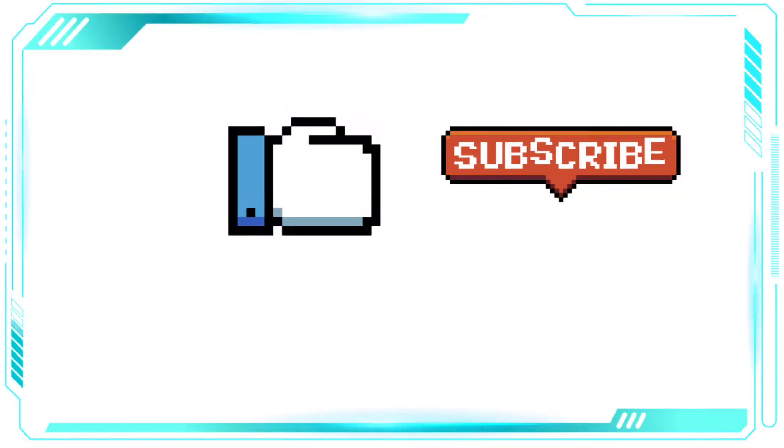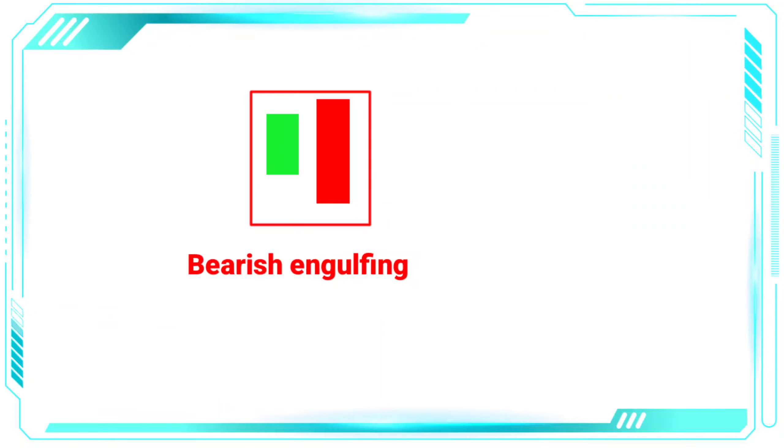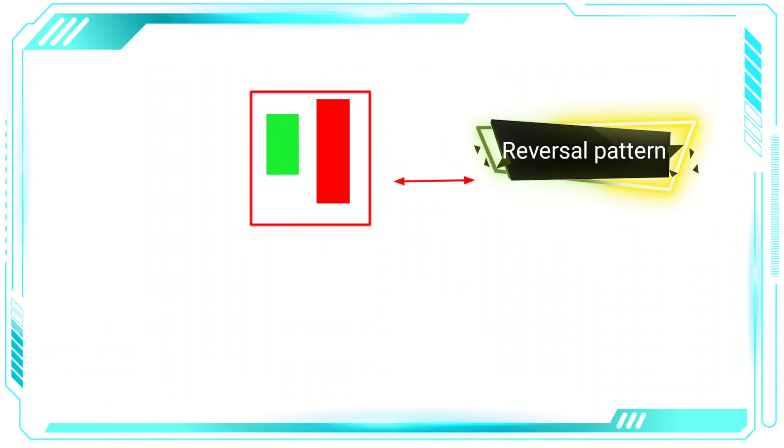Let's start discussing the bearish engulfing pattern. The bearish engulfing pattern is a popular candlestick pattern used in forex trading to signal a potential reversal in the market. This pattern is formed when a small bullish candle is followed by a large bearish candle that completely engulfs the previous candle, indicating a shift in market sentiment from bullish to bearish.